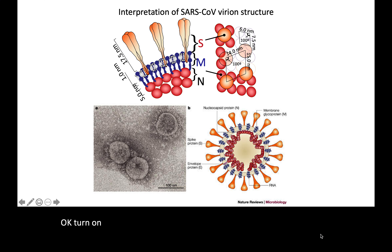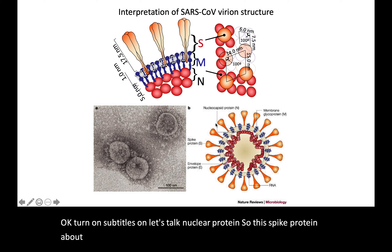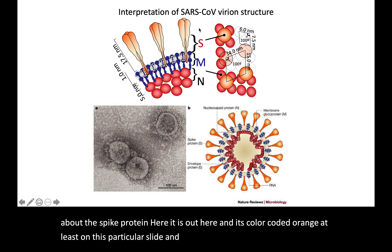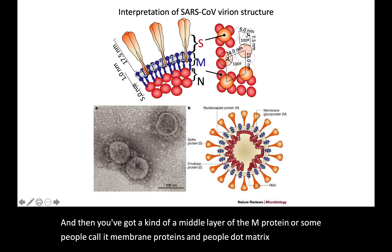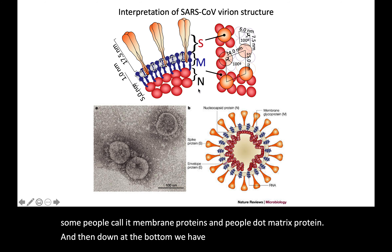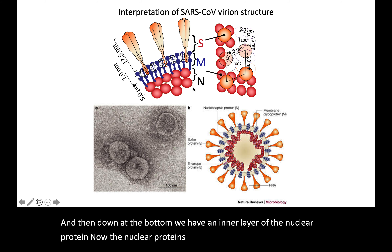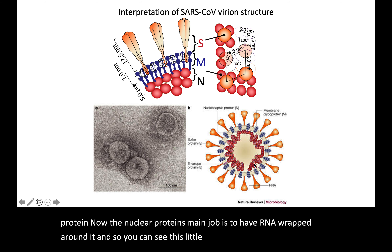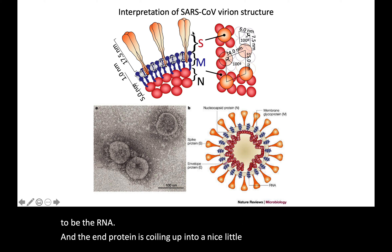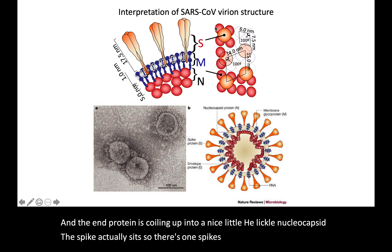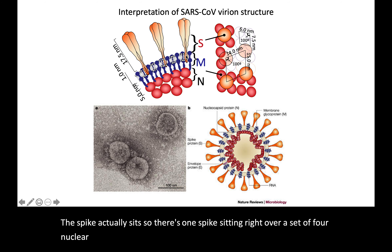Let's talk about the nuclear protein. The spike protein is the outermost layer, color-coded orange on this slide. Then there's a middle layer called the M protein — some call it membrane protein, others call it matrix protein. At the bottom is an inner layer: the nucleoprotein. One spike sits right over a set of four nucleoproteins, anchored at the membrane. The M protein holds on to both the tail of the spike and the N protein, keeping everything in place.